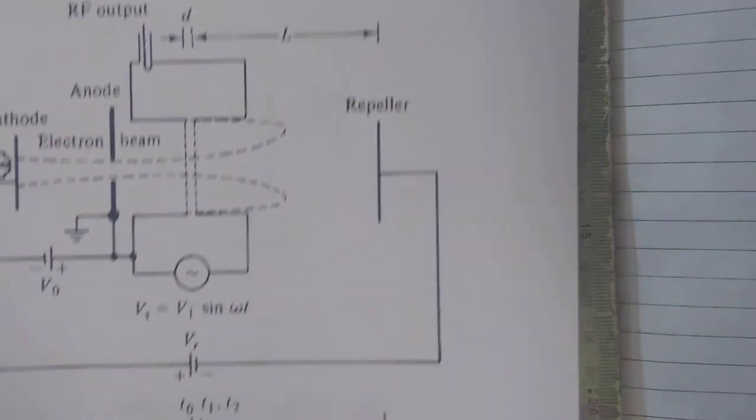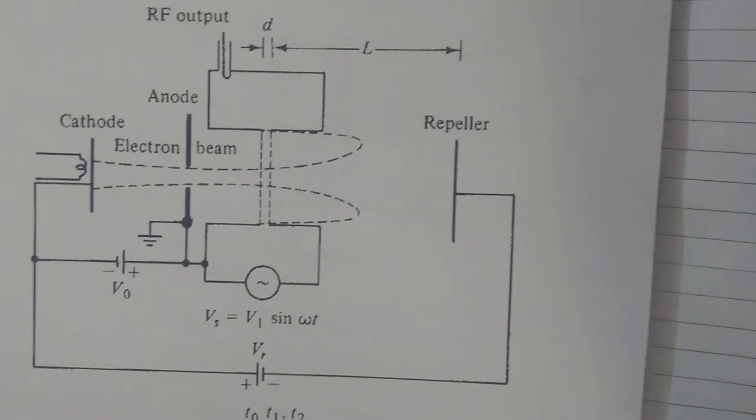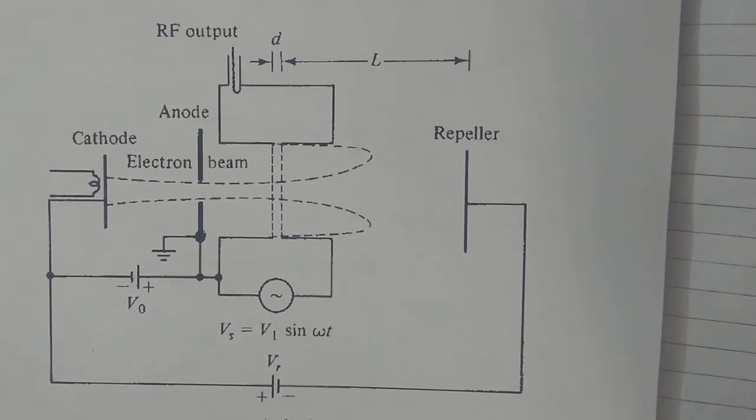Hello and welcome to this video lecture series on microwave tubes. In this video, we will discuss another microwave tube which is a reflex klystron. Reflex klystron is basically used as a low power microwave oscillator.